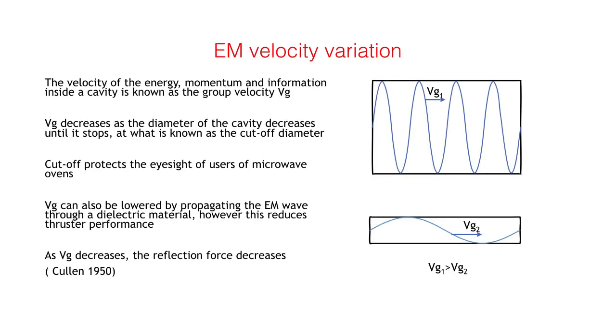vg is the group velocity of the energy, momentum, and information in any guided wave structure. In a circular cavity, vg varies with the diameter of the cavity and decreases with decreasing diameter until the velocity is zero.